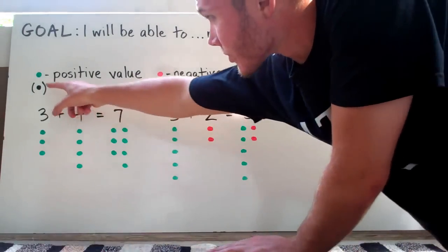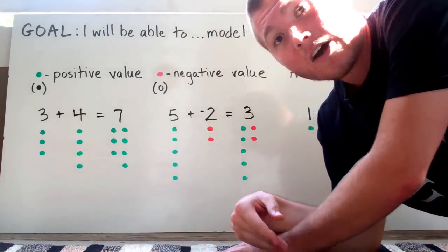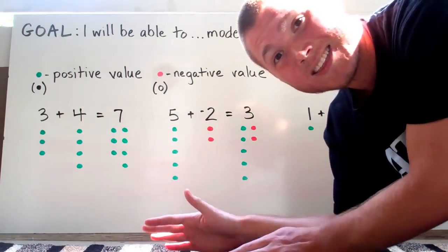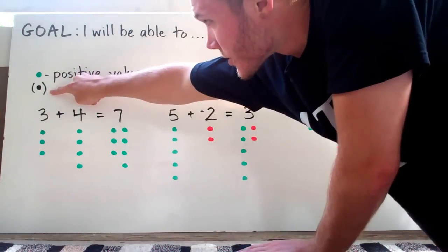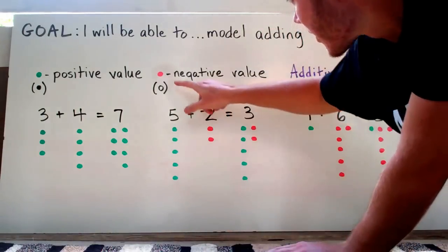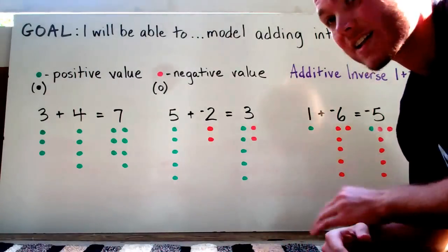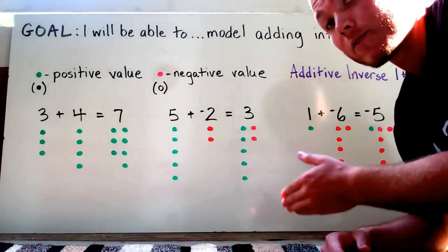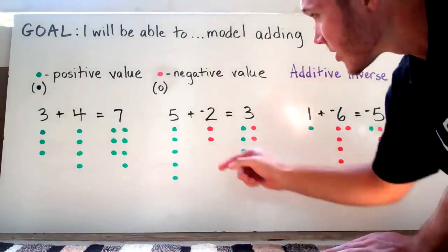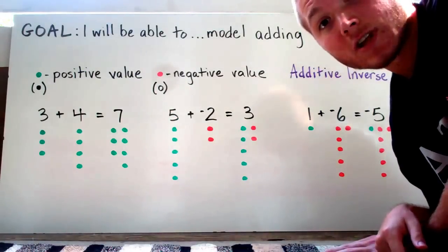These green dots are going to represent positive values. Now, if you don't have colored pencils or markers at home and you're just using a pencil or a pen, I want you to use solid black dots for positive values or positive integers. The red ones are going to represent negative values. If you've got a pen or a pencil at home, use an open dot to represent the negative values.